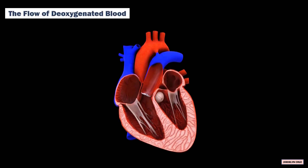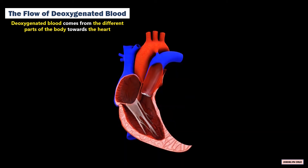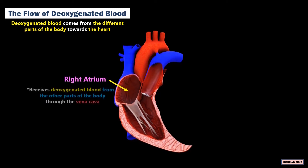Blood flow through the heart. The oxygenated blood comes from the different parts of the body towards the heart. The right atrium receives the oxygenated blood from the other parts of the body to the vena cava.